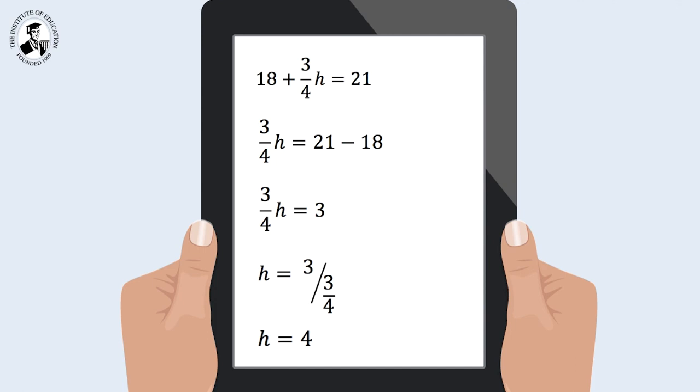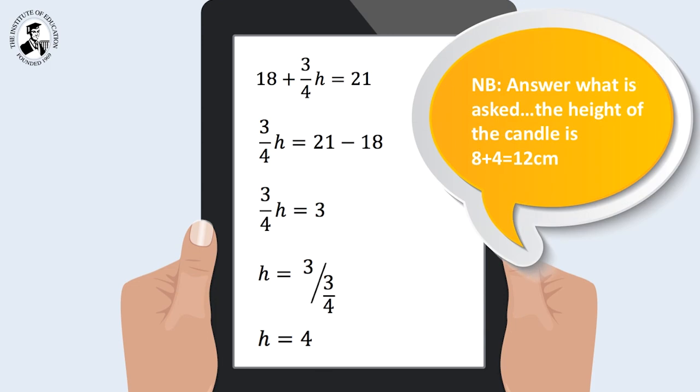If students are going to use this method to solve for h, they must make sure they have practiced it on their calculators. Always double check that you have answered what has been asked, that is the height of the candle is 12cm, that is 8 plus 4.